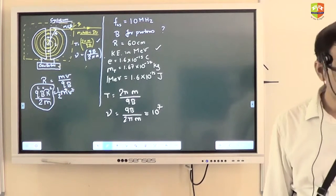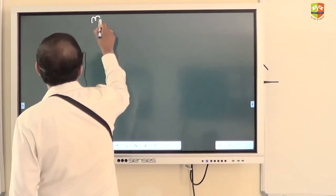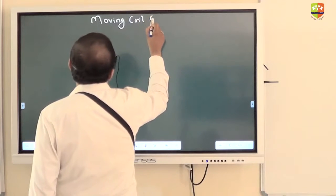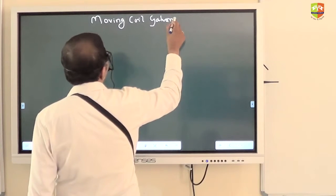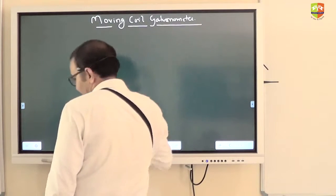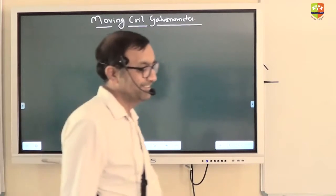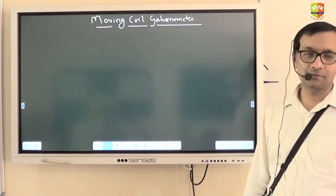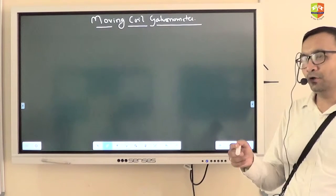Ok right now, moving coil galvanometer. This is a second instrument from this chapter. You might have already used moving coil galvanometer in the previous chapter also, you had that jockey connected to galvanometer to find the null point.